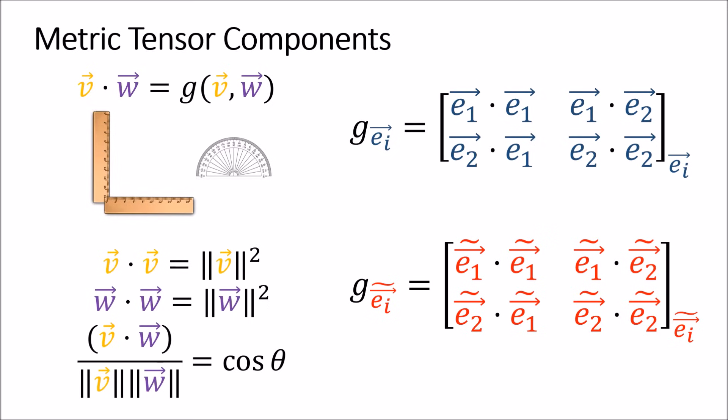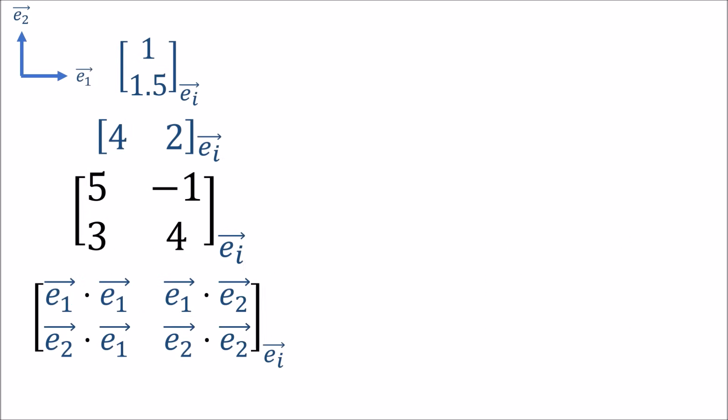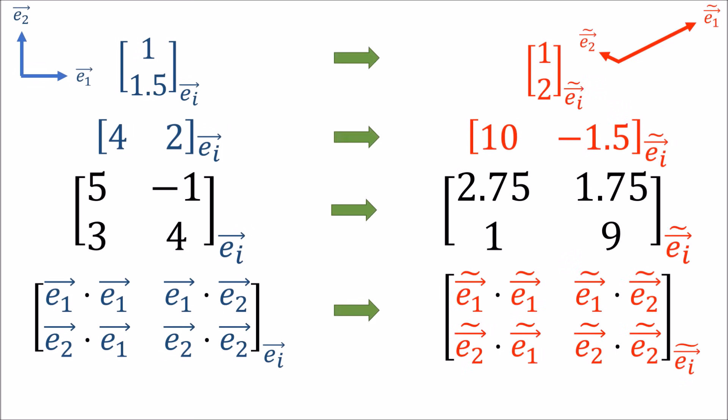The dot product can help us get vector lengths as well as the angle between a pair of vectors. So when we have a tensor and a set of basis vectors we can always find a way to measure the tensor's components. If we change the basis vectors we're using, we'll get a different set of components for that same tensor. Since the same tensor can have different components based on which coordinate system we use, we're left with the problem of how to convert tensor components from one basis to another.